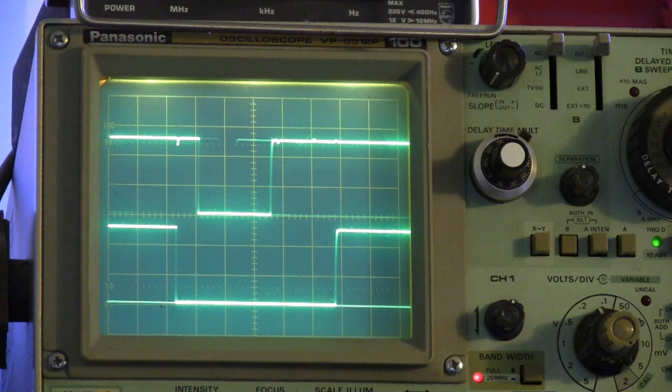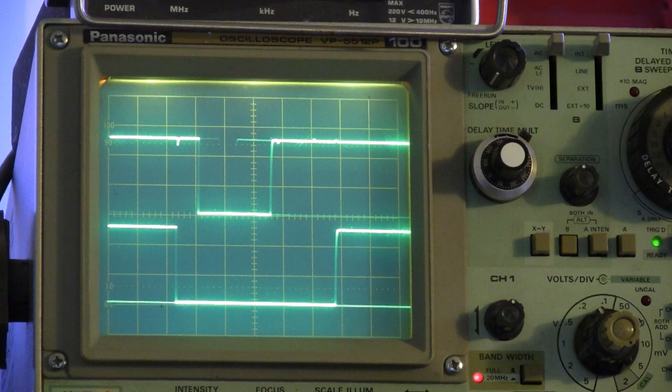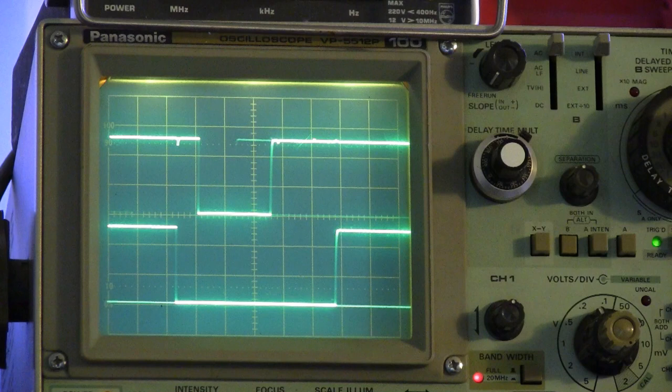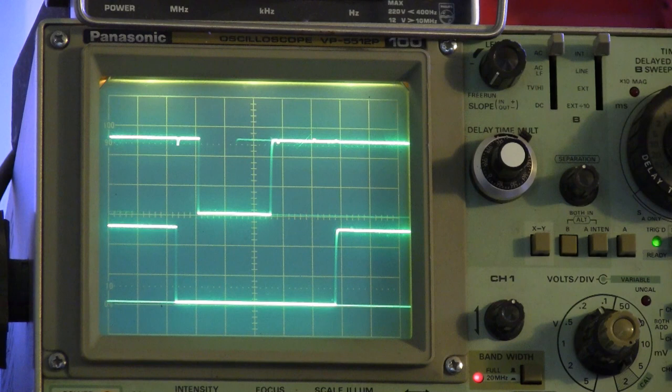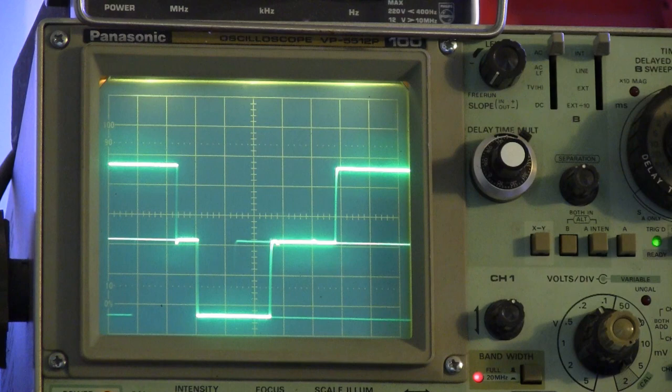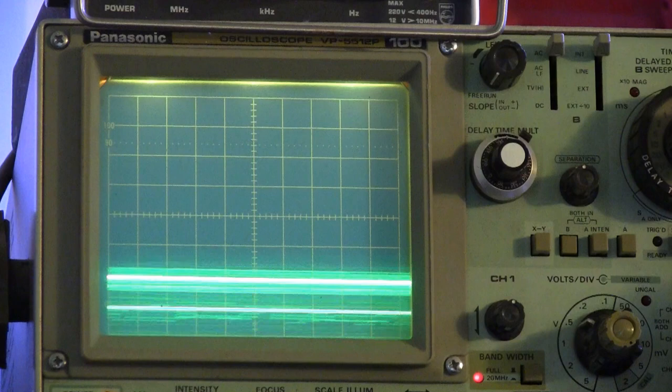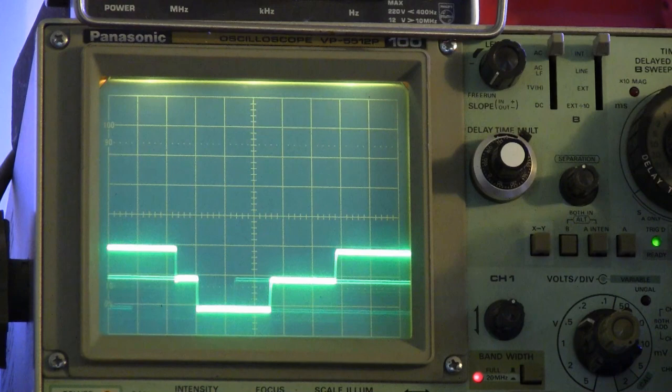Now we can do a neat trick with the scope. We can add our two signals together. I'm looking for that button. Both in for add. So now when we add our signals together, what does that look like to you? Doesn't that look like a video signal?